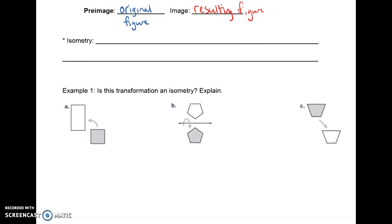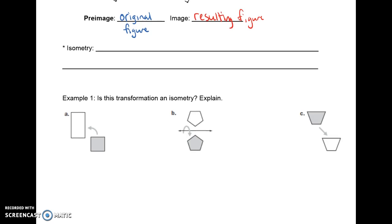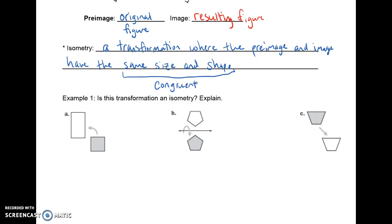And then the other vocabulary I want us to look at today is what's called an isometry. So what does it mean to be isometric or have an isometry? So an isometry is basically a transformation where the preimage and image have the same size and shape. So it doesn't matter if we turn it, flip it, or move it around. It just has to maintain the same size and shape, which you'll remember is what we talk about when we talk about congruent. And this is something to think about when we start proving figures are congruent. If you want to think about it in terms of a transformation, we can always use transformations to show that shapes are congruent because when it's an isometry.